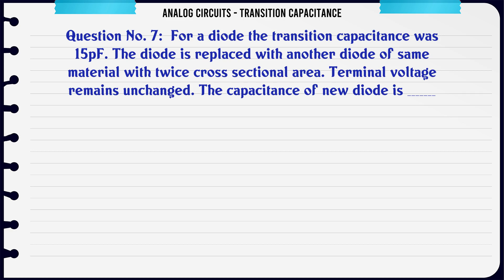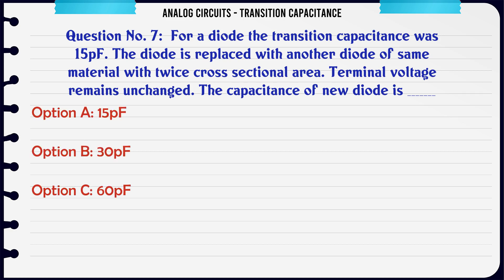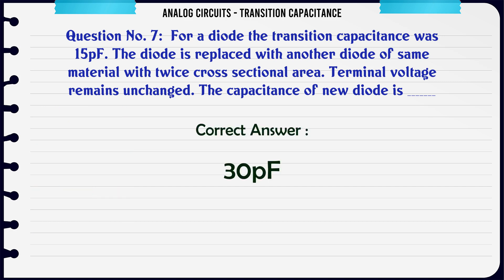For a diode, the transition capacitance was 15 PF. The diode is replaced with another diode of the same material with twice the cross-sectional area. Terminal voltage remains unchanged. The capacitance of the new diode is: A: 15 PF, B: 30 PF, C: 60 PF, D: 7.5 PF. The correct answer is 30 PF.